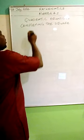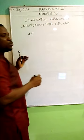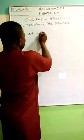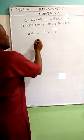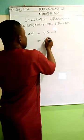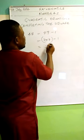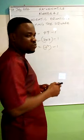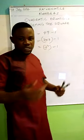For example, if I have something like 48 and I want to make it a perfect square, I will say this is equal to 49 minus 1. So I can have a perfect square of 7 times 7 minus 1, which is 7 squared minus 1. This is just the basics to work on for completing the square.